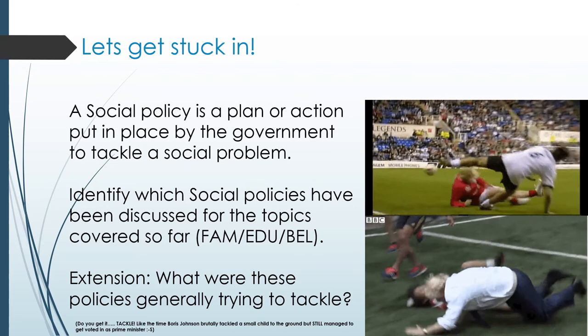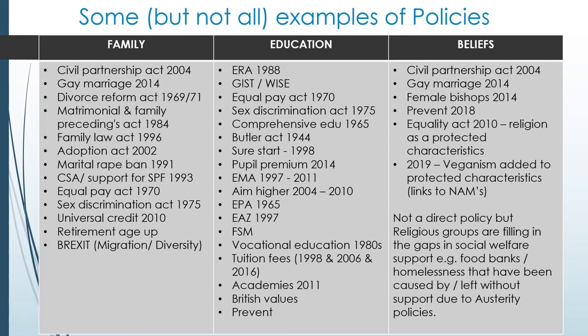Here's the list — some but not all of those policies mentioned previously. For family, we saw civil partnership acts, gay marriage, divorce reform acts — a lot of the policies either changed the structure of family by changing divorce proceedings, making it easier, quicker, or slowing the process down. We saw changes with civil partnerships, gay marriage, and adoption, and changes in the role of women with equal pay, sex discrimination legislation, and the marital rape ban. Ultimately, the impact of most policies was to either increase diversity or maintain traditional values.